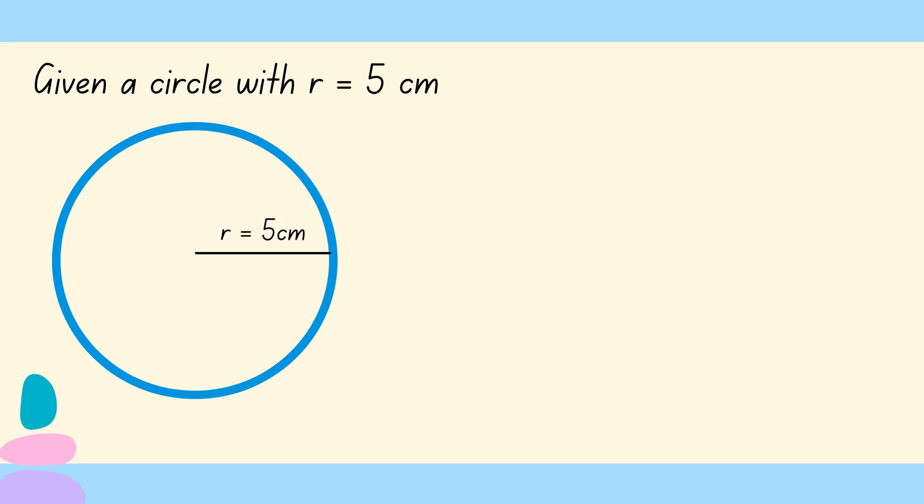How about if our given is a circle with radius 5 centimeters? As we all know, the diameter is half of the radius. So given the radius of 5 centimeters, so meaning we'll use the formula C equals 2 times pi times R, where circumference equals 2 times 3.14 times 5 centimeters.